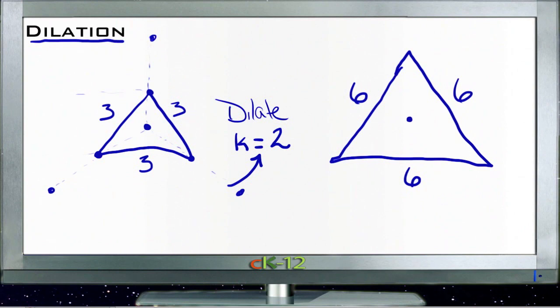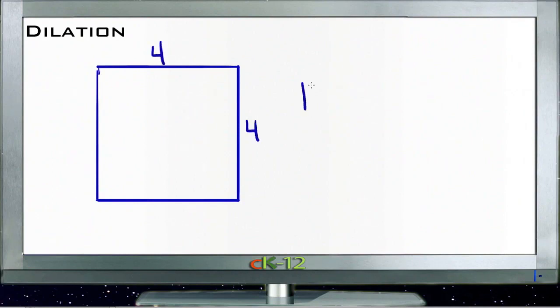Let's do another example here. We'll do a square. Suppose I had a square that was four on each side, four units in each direction, and I need to dilate it by a k of one-half.